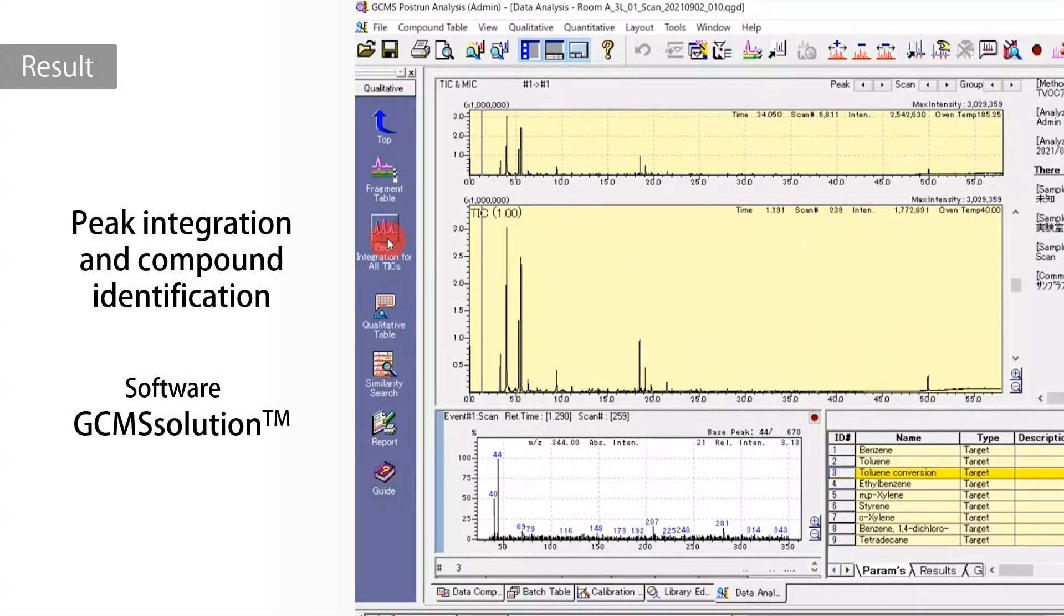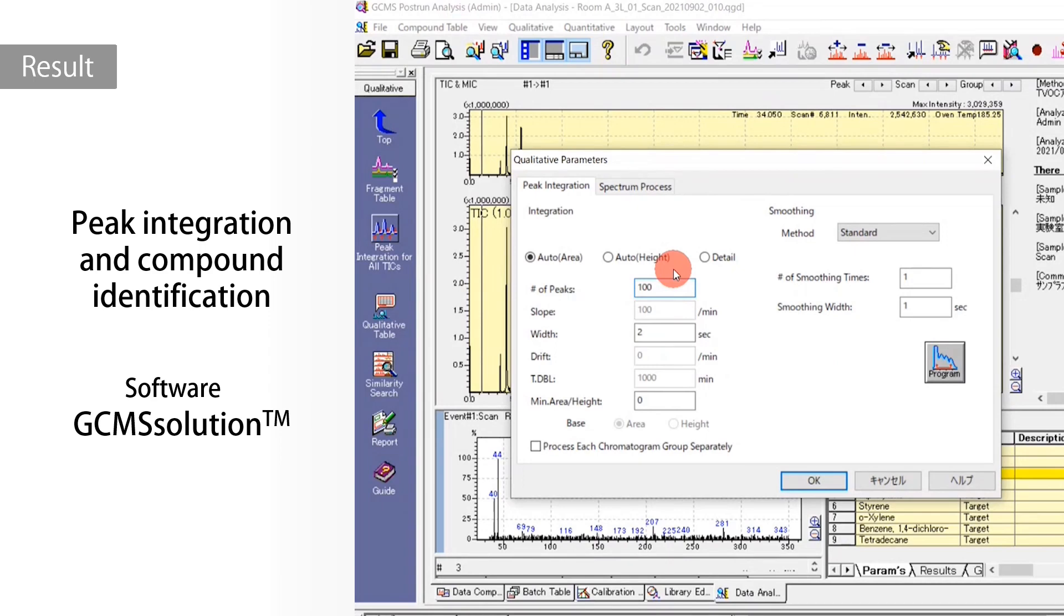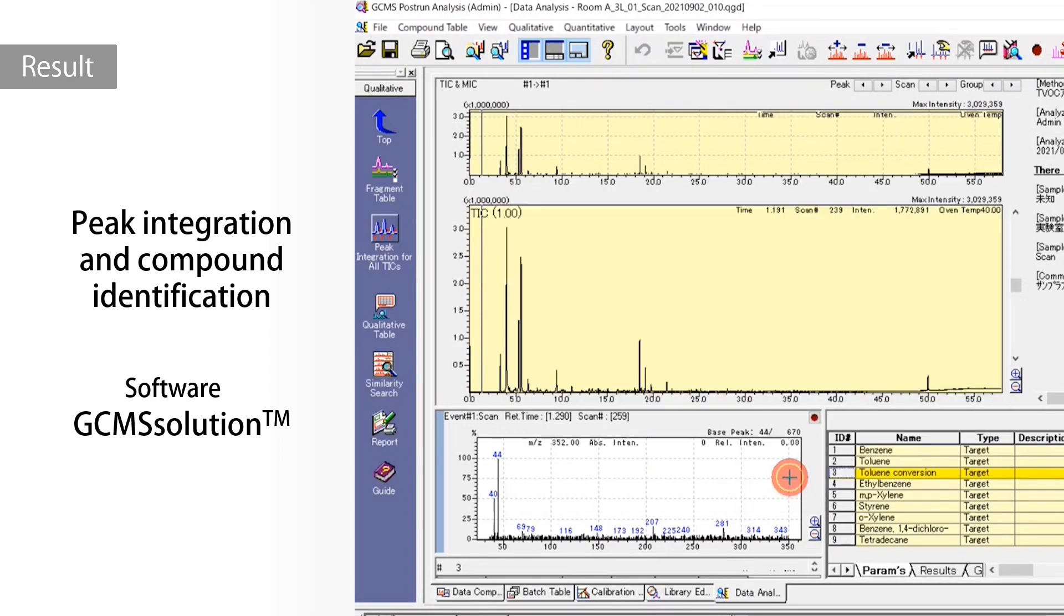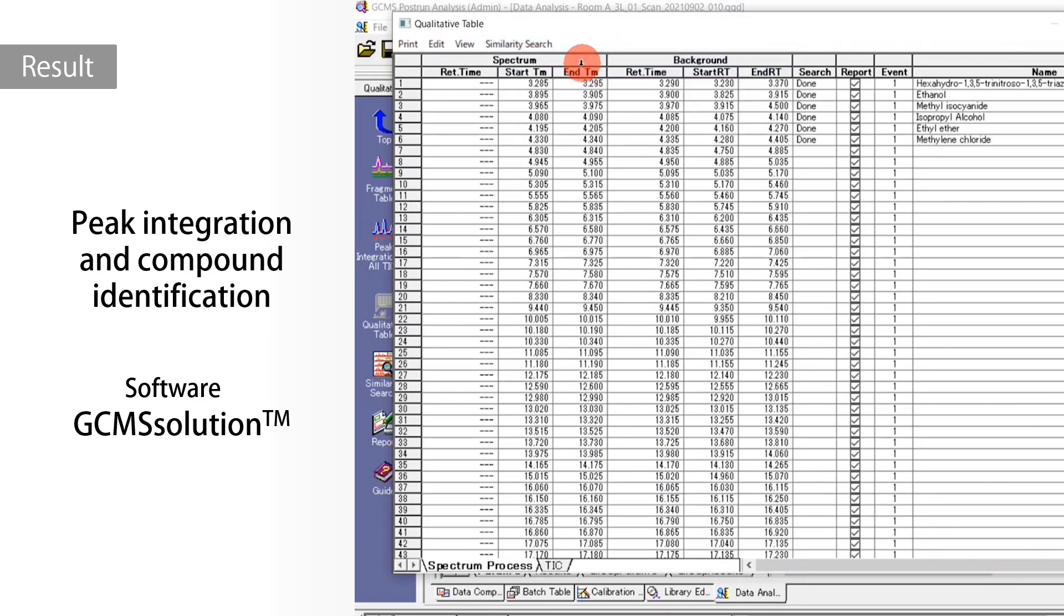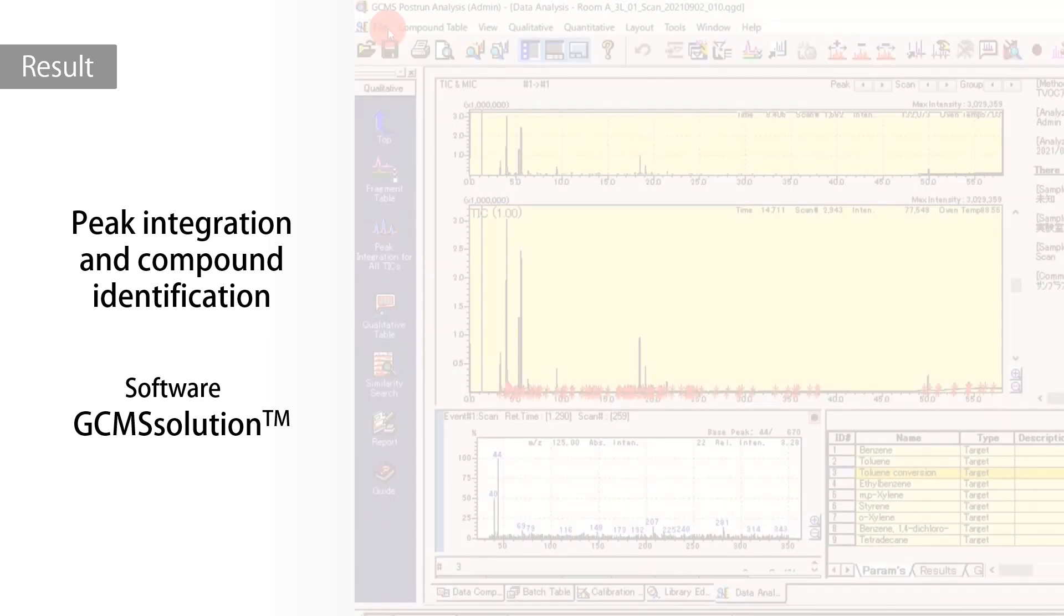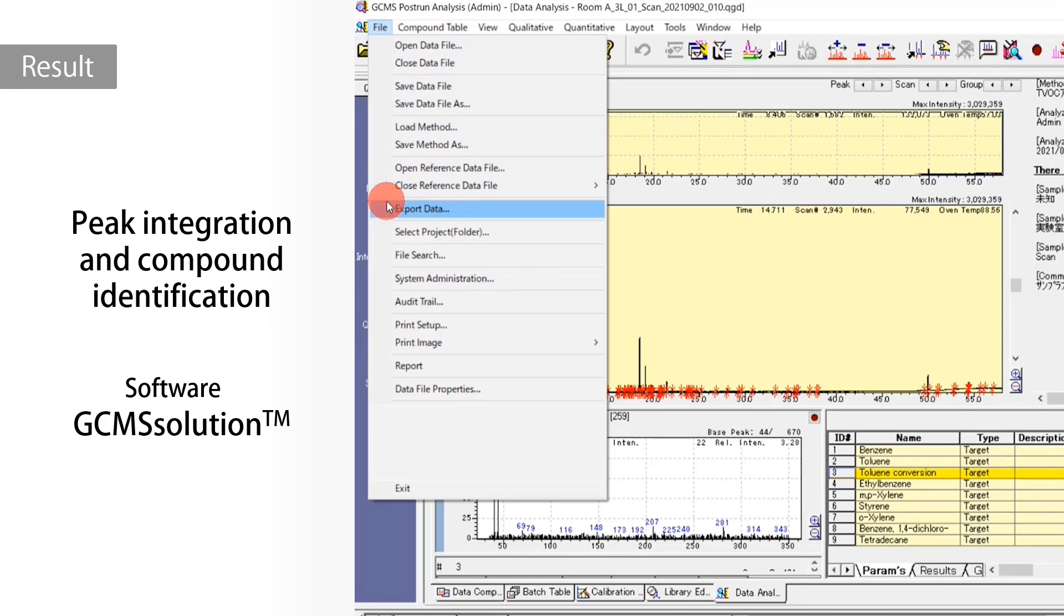After the measurement, data was processed with GC-MS solution. All peaks were integrated, and their corresponding compounds were identified. The results were exported in a CSV file.